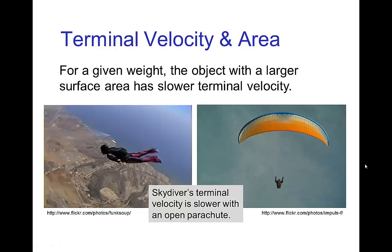Now for a given weight, the larger the surface area, the slower the terminal velocity. So the skydiver, before opening the parachute, has a rather high terminal velocity. But after opening the parachute, the weight hasn't changed, but the surface area has increased quite a bit. So to match the parachutist's weight, the parachute doesn't have to move very fast because air resistance is large when the surface area is large.